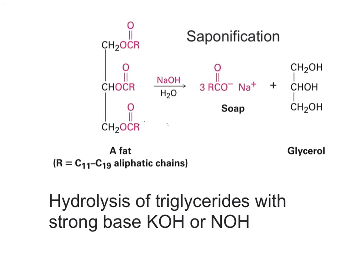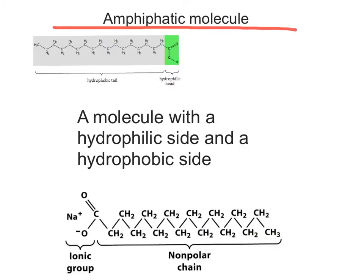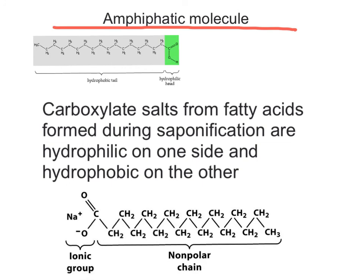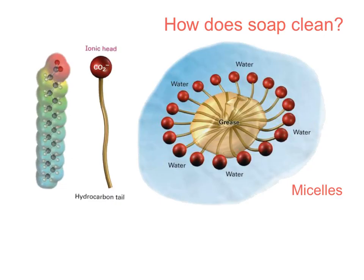The soaps that we use contain small amounts of other materials such as perfumes, deodorants, skin moisturizers, and colorants. Soaps are amphipathic because the carboxylate part is hydrophilic and mixes with water, and the long hydrocarbon chain of the fatty acids is hydrophobic. This property is what allows soap to remove grease from our skin. Amphipathic molecules are said to have a hydrophilic head and a hydrophobic tail.